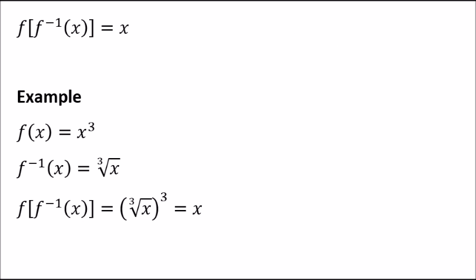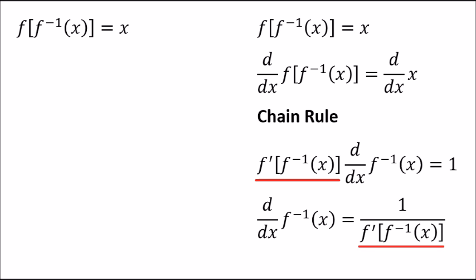In order to do that, we first need to know the expression for the derivative of an inverse function. As we've seen many times, a function whose argument is its inverse simply spits out the value x. This can be seen for the cubic root of x cubed. That being said, we can take the derivative of the left-hand side and right-hand side. The chain rule says we take the derivative of the outside function times the derivative of the inside function.